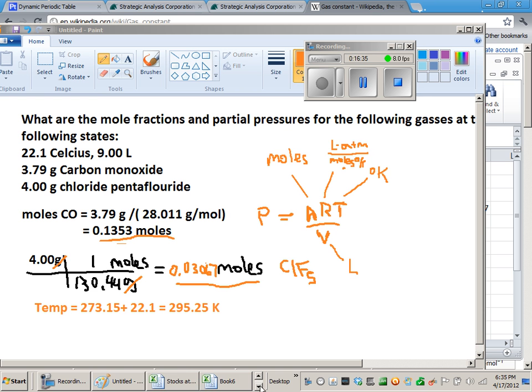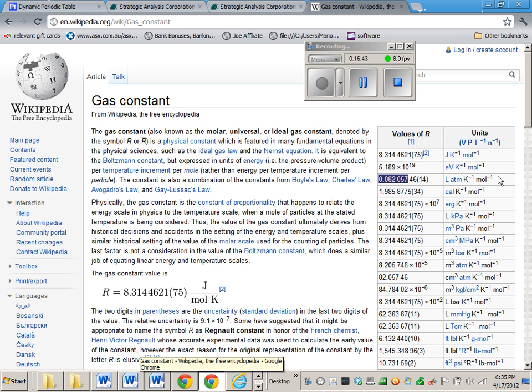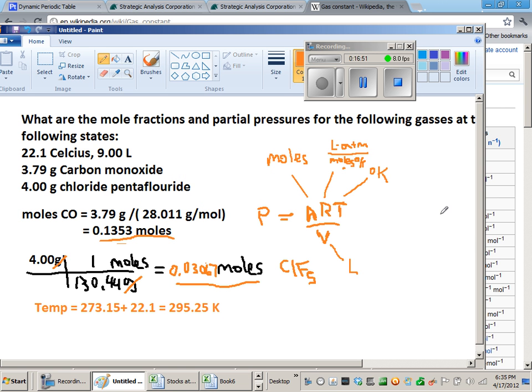Remember how I went to Wikipedia and found that list of all the different gas constants based on different units? I picked this one: the one with liters and atmospheres and Kelvin and moles in it. If you look back at how we started this problem and the different units we had, we had moles in n, degrees Kelvin in T, and liters in volume. I selected the one that had liters times atmospheres divided by moles times Kelvin. This allows us to cancel all the units except for the pressure unit, atmospheres.